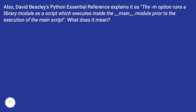David Beasley's Python Essential Reference explains the `-m` option as running a library module as a script, which executes inside the `__main__` module prior to the execution of the main script. What does that mean?